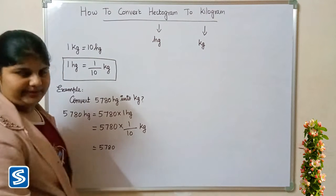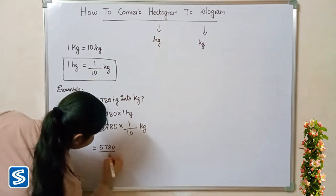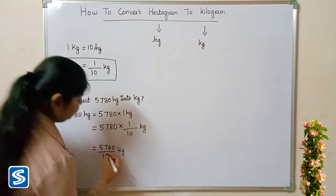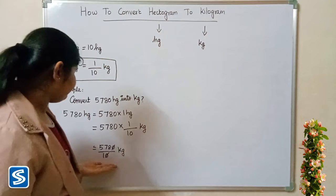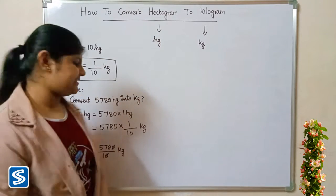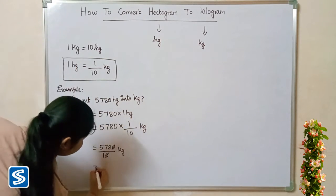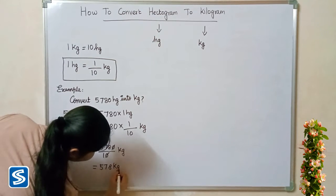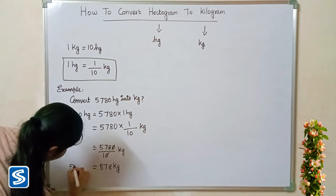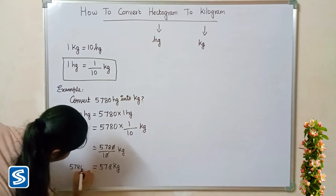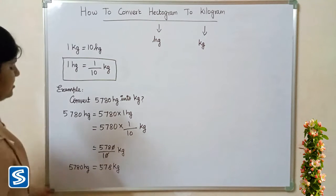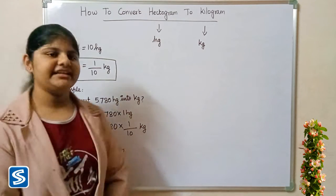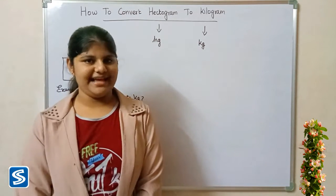Here the zero gets cancelled. When we divide 5780 by 10, our answer will be 578 kilograms. So 5780 hectograms equals 578 kilograms.